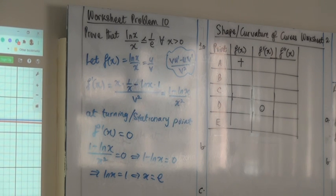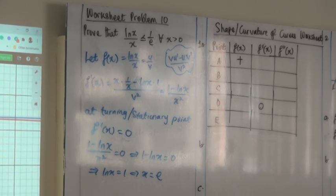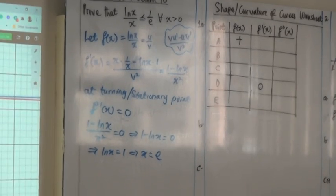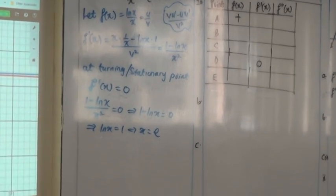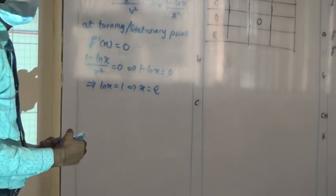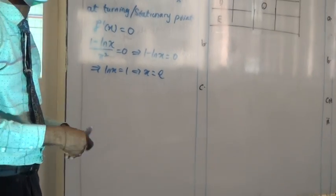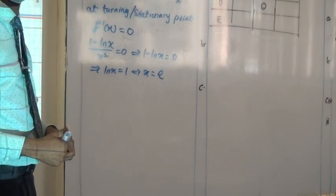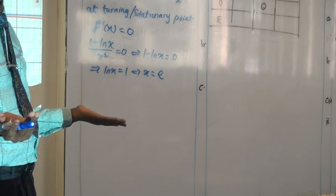ln is log to base e, so that's e to the power 1. So at this turning point, x is equal to e — there is only one turning point, basically.